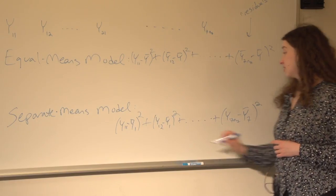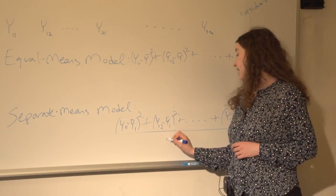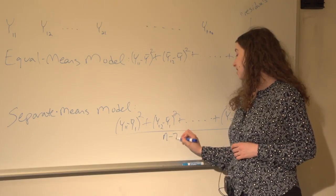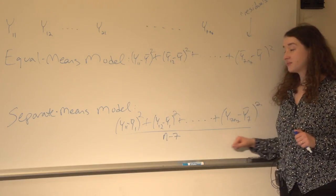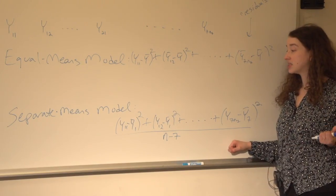This separate means sum of squares, if I were to divide by N minus 7, because I've estimated 7 means here, this is just the pooled variance, parallel to the pooled variance estimate from the pooled t-test.